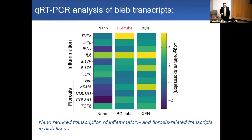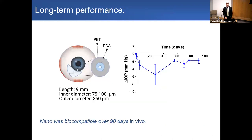Gene transcription analysis in bleb tissue from each implant showed that the nanofiber surface had significant antifibrotic and anti-inflammatory activity, suggesting these effects are working at a molecular level and occurring over at least 28 days.